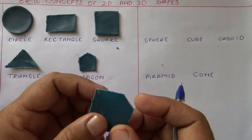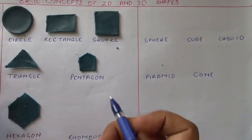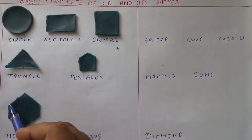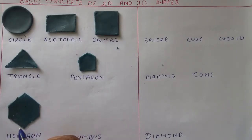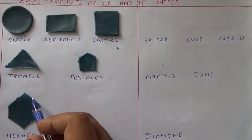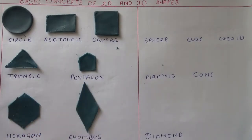This shape has six sides and six angles: one, two, three, four, five, six.